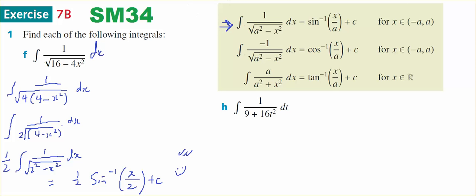Okay, in the second example that I've got there, which is 7b question 1h, I've got a 9, I've got a 16t squared divided by 1. So I'm going to be using this rule, which is the inverse tan. However, I don't want that 16 there, so I'm going to take the 16 out as a common factor. 1 on top of 16. The 9 divided by 16 is 9 on 16. The 16t squared divided by 16 is plus t squared, dt.